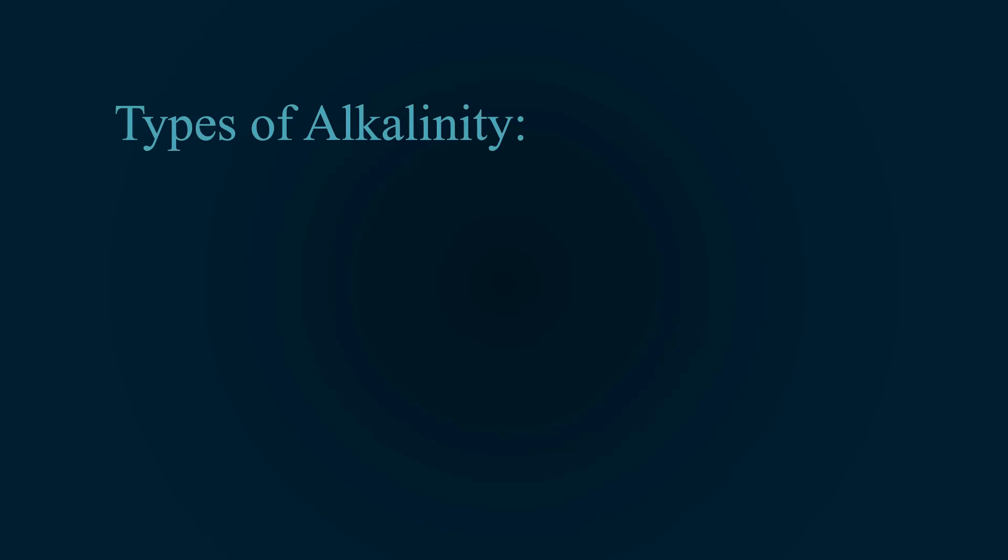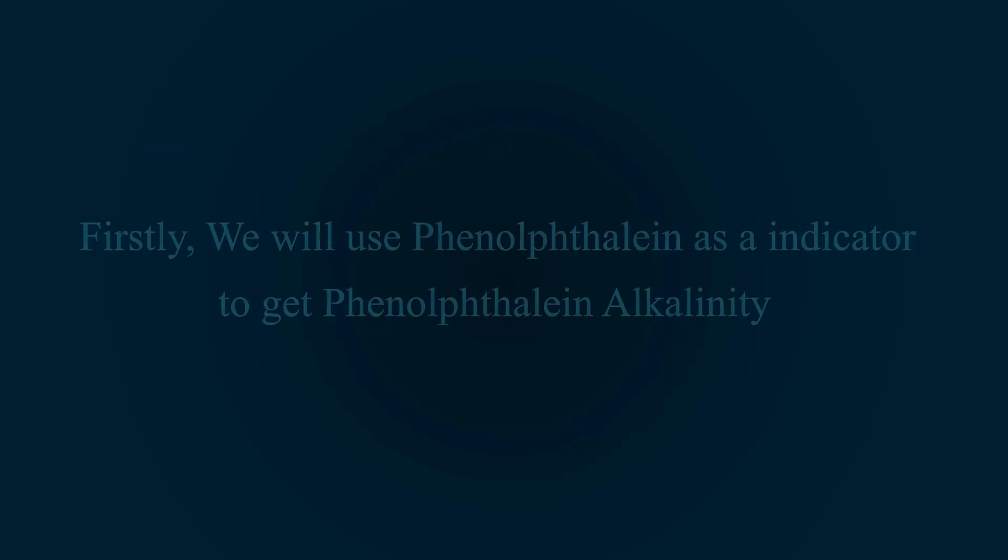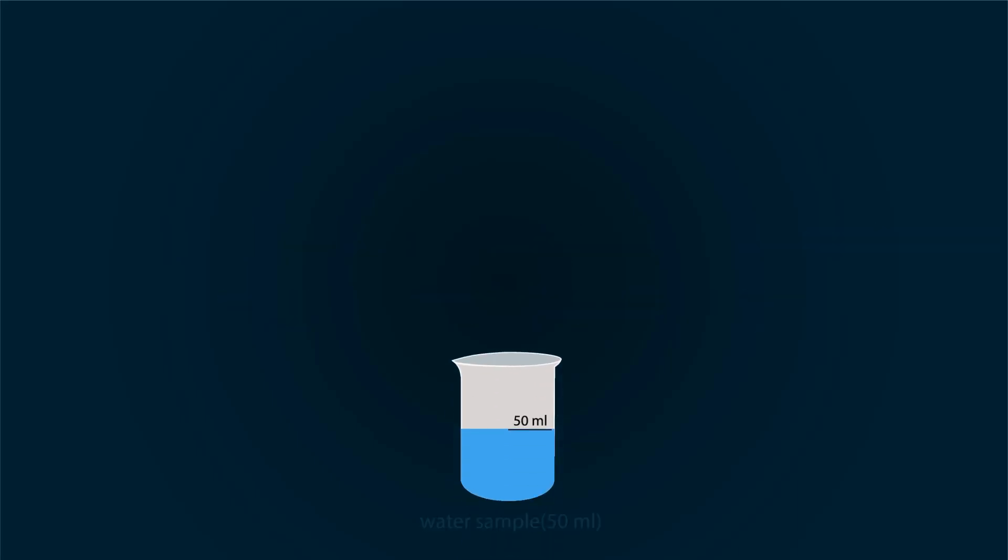There are two types of alkalinity: phenolphthalein alkalinity and methyl orange alkalinity. First, we will find phenolphthalein alkalinity by using phenolphthalein as an indicator. Take 50 ml water sample and add 1% phenolphthalein indicator into it. 2 to 3 drops would be enough.